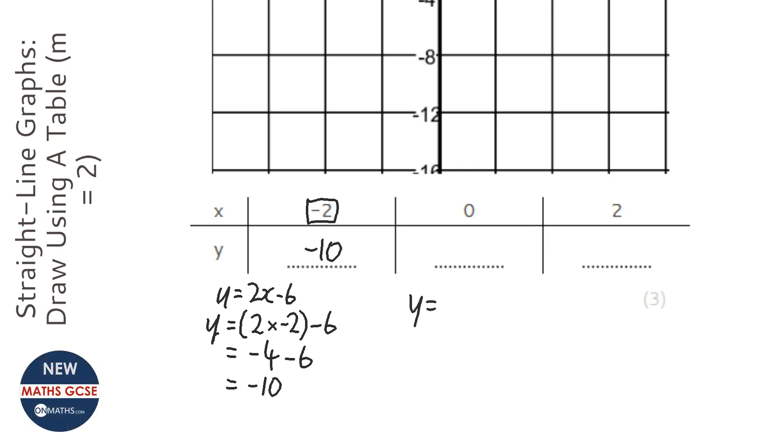We're going to do the same for 0. So y = 2 times 0, take away 6. Anything times 0 is 0. And 0 take away 6 is -6.